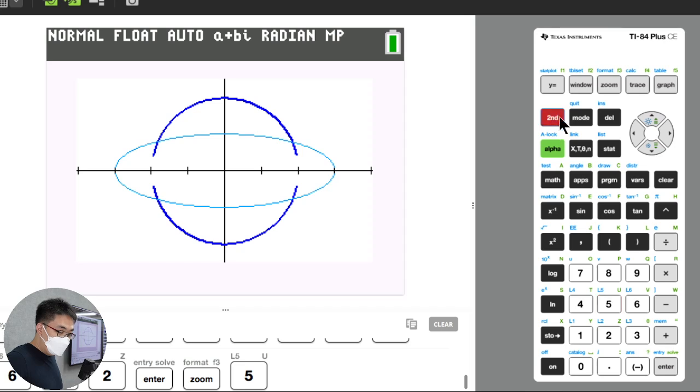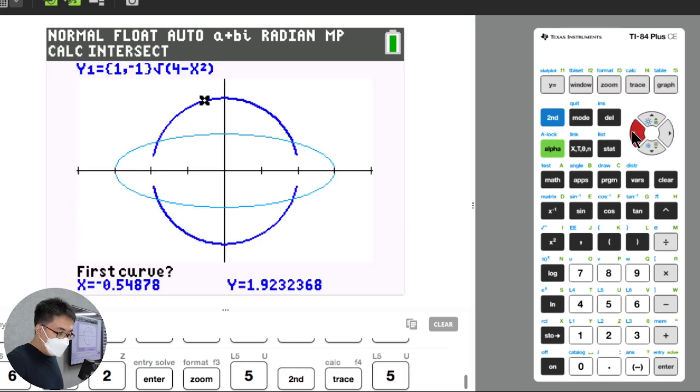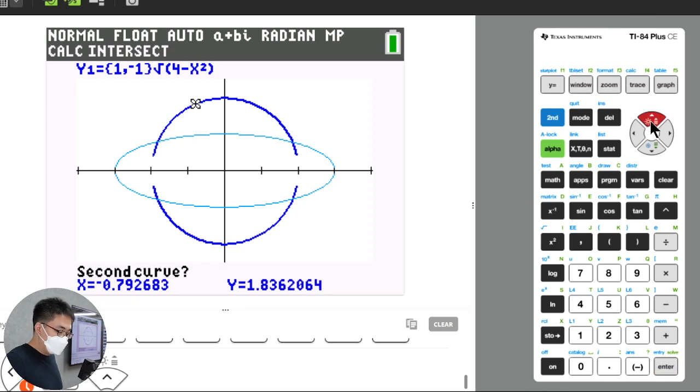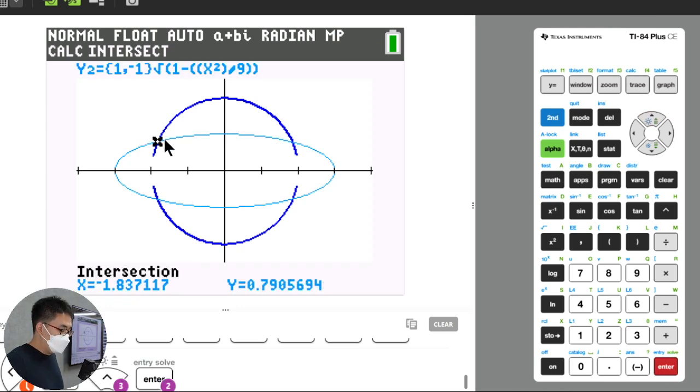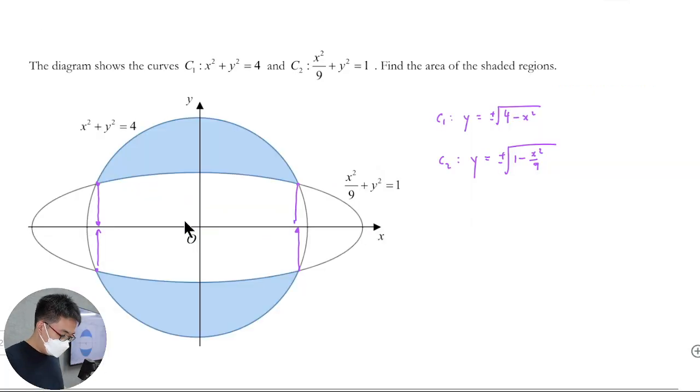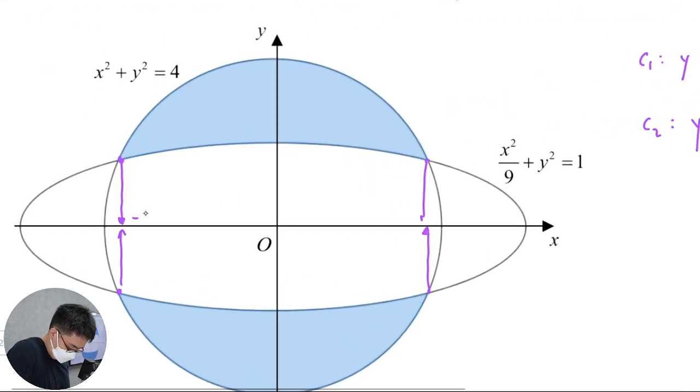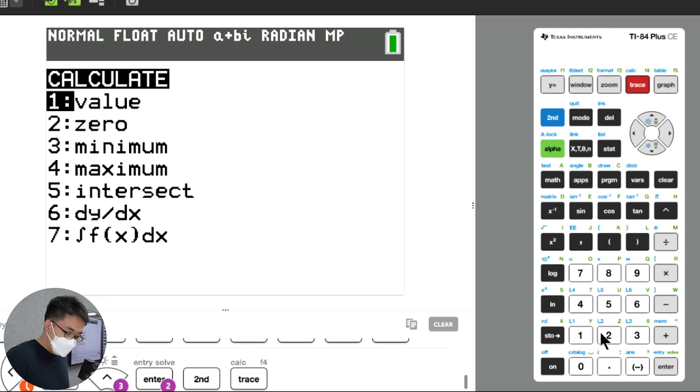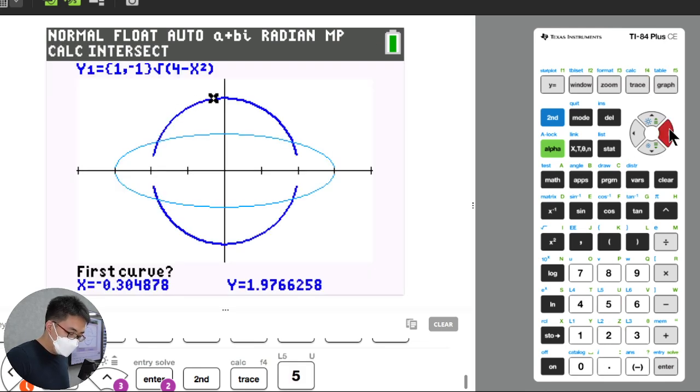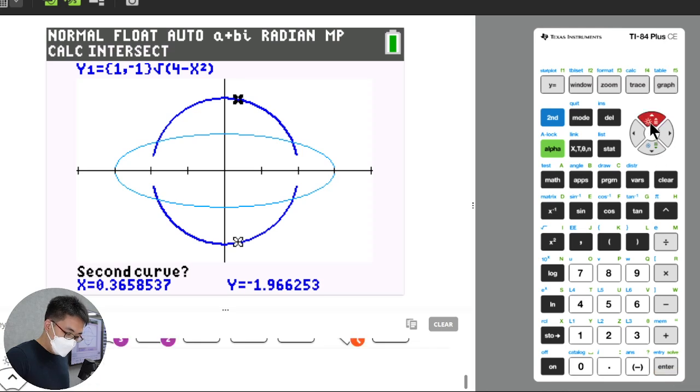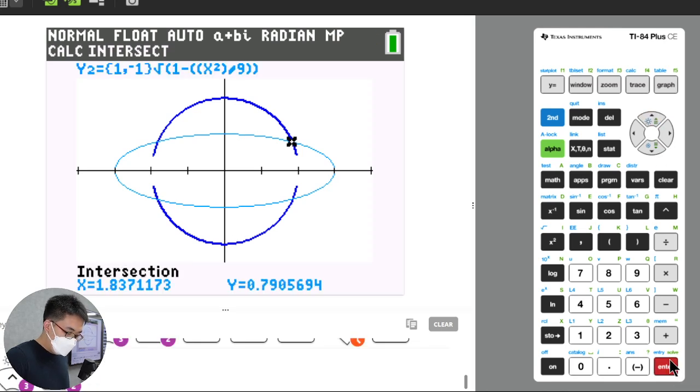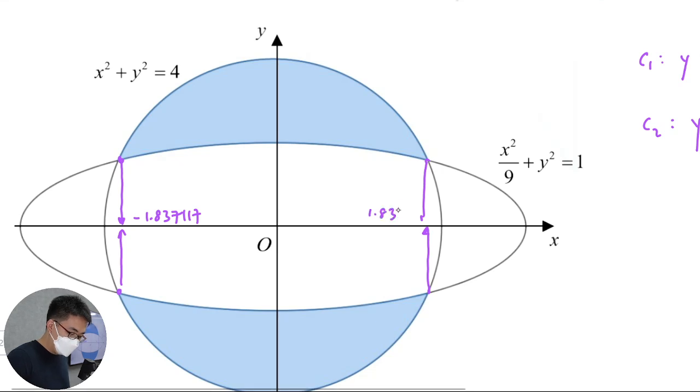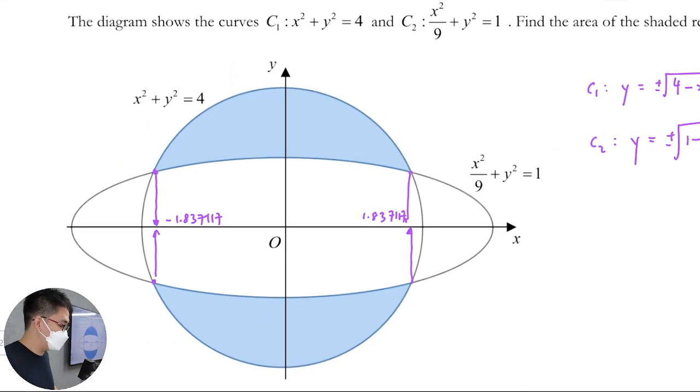From here what you can do is actually just find the intersect by using this graph here. So repeat, conics app cannot do this kind of thing, so please make sure you understand that. You can find this point here, it's negative 1.837117. So this is negative 1.837117, and then the other side, the second, then you enter 1.837. Why am I kidding you, of course it's symmetrical.